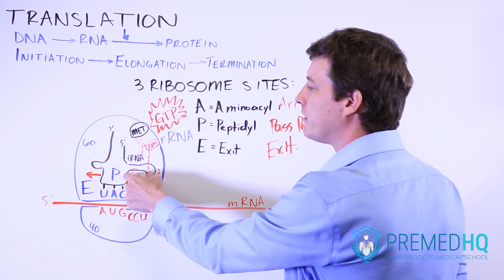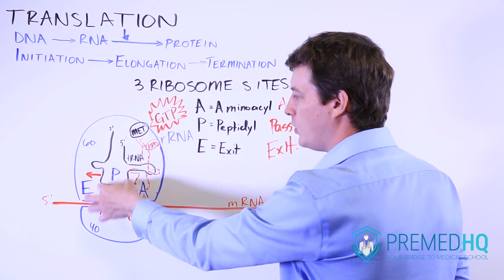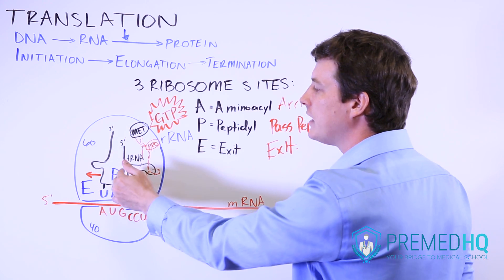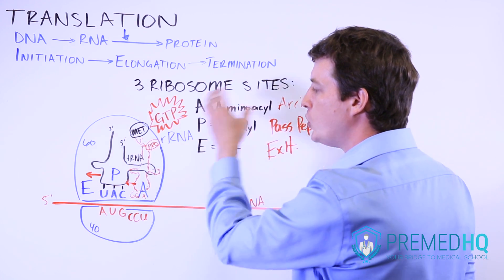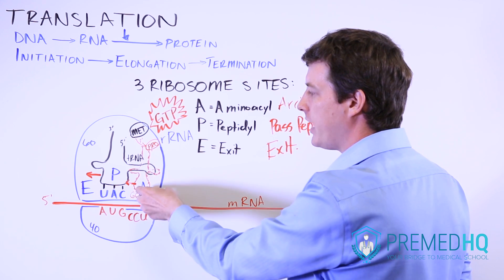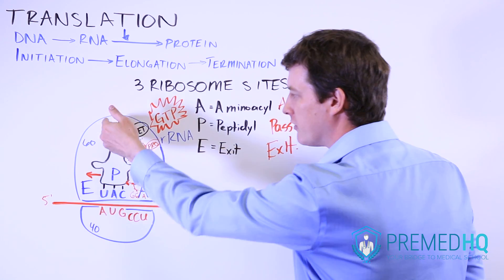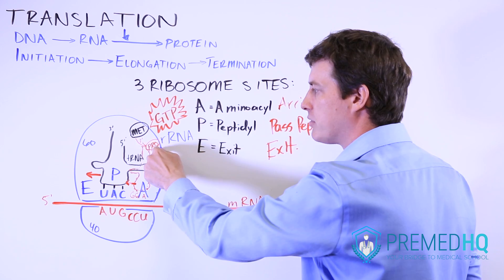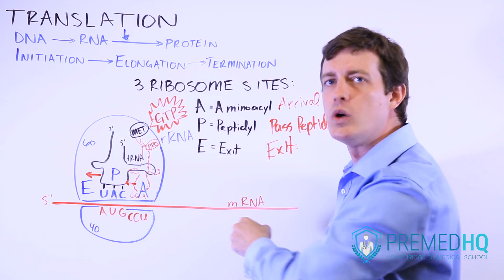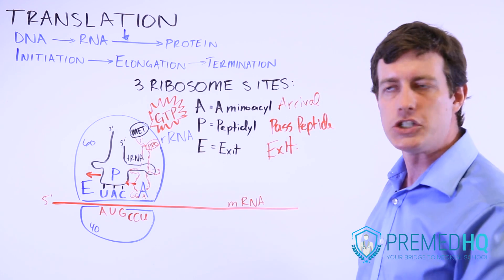And as this red one moves over here into the peptidyl or P site, then some new tRNA will arrive to the A site. And then as that shifts over, it will pass this methionine proline to the new and growing protein chain.